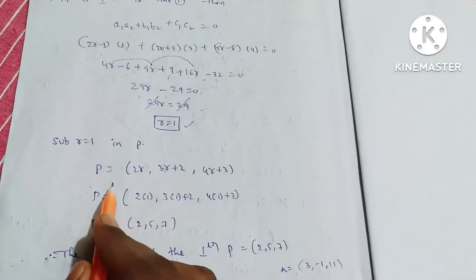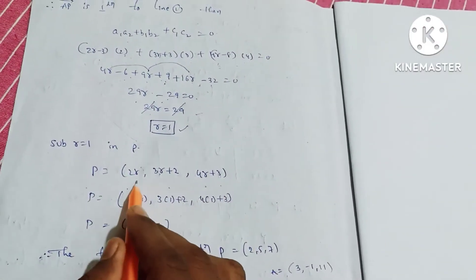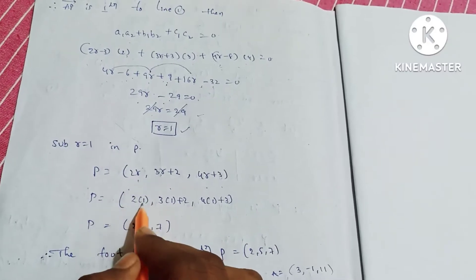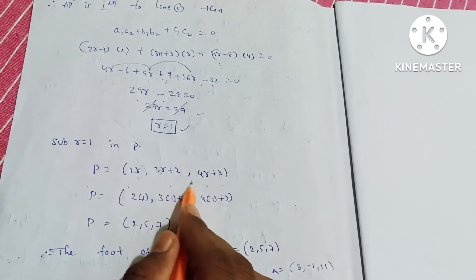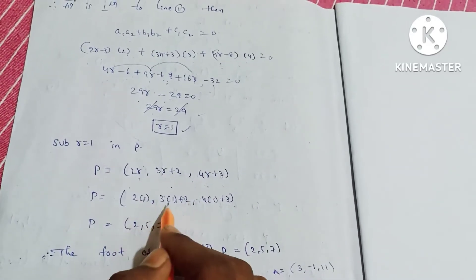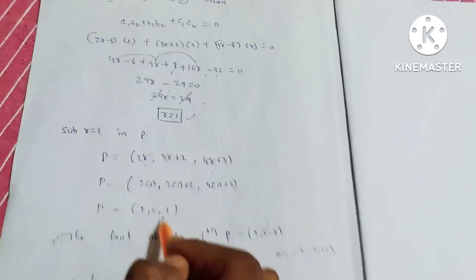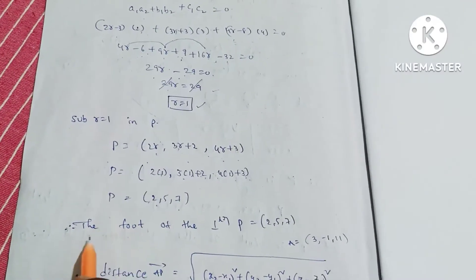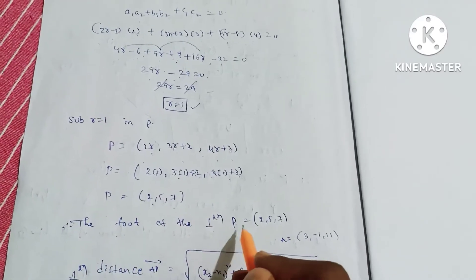Substitute r=1 in the P point. So P equals (2r, 3r+2, 4r+3). When r=1: 2(1)=2, 3(1)+2=5, 4(1)+3=7. Therefore, the foot of the perpendicular P is (2, 5, 7).